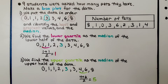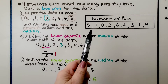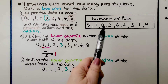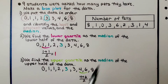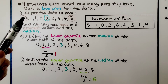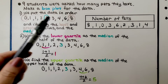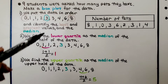Nine students were asked how many pets they have — make a box plot for the data. We see the number of pets they gave as answers, and we have 9 data values. We put them in order from least to greatest, then we can identify the least is 0 and the greatest is 8, and we can identify the median.